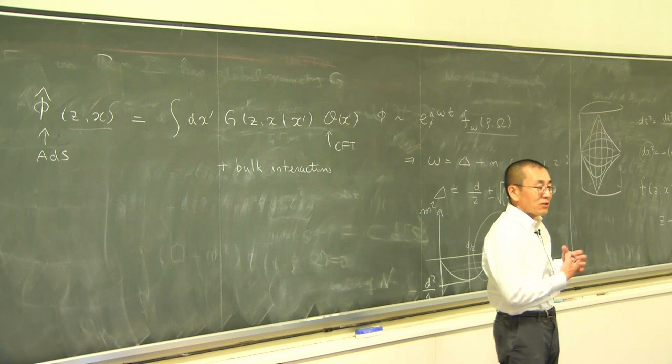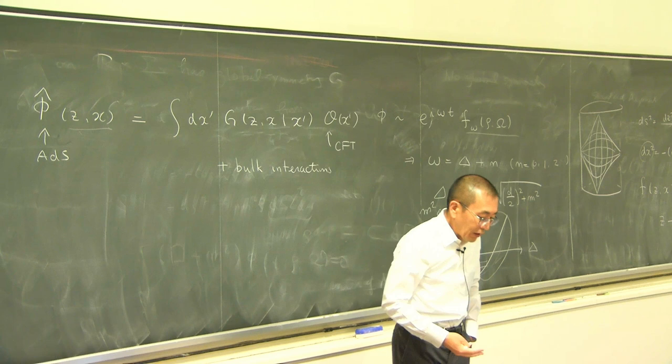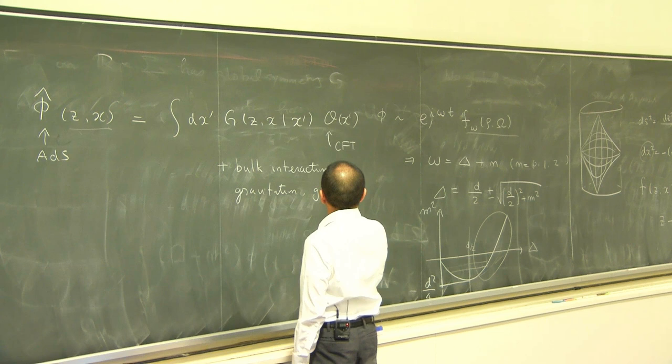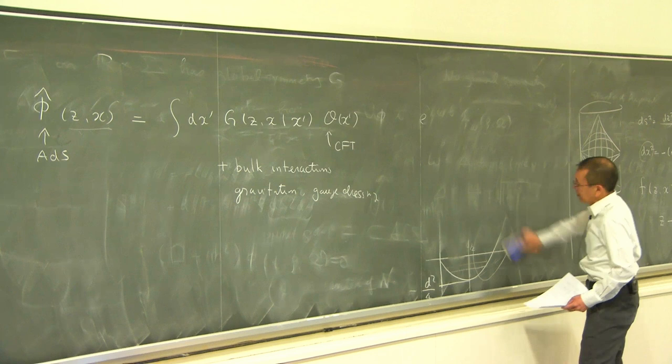This procedure is called gravitational dressing. If the operator has gauge interactions, it must also be dressed by gauge fields — this is called gauge dressing. These are subleading effects that we have to pay attention to, but we can take care of them order by order in the weak gravitational interaction.